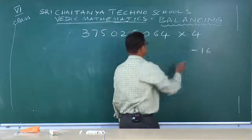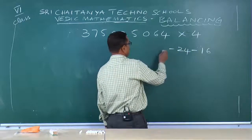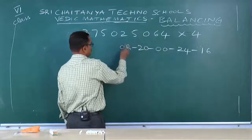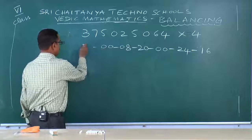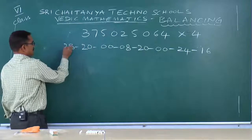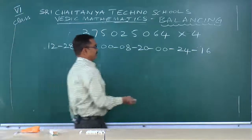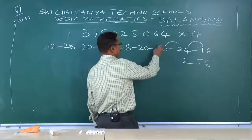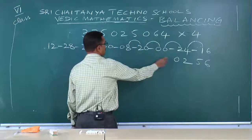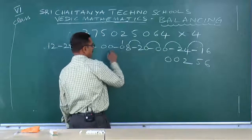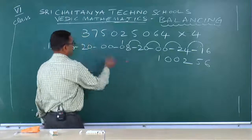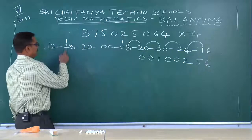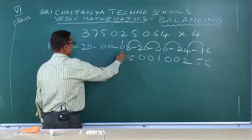4 into 4: 16. 24. 0, 0. 20. 0, 8. 0, 0. 20. 28. 12. 6 comes out. 5, 2, 0, 0. 1 is carried forward. 1 plus 0: 1. 0 plus 0: 0. 2 plus 8: 10. 1 is carried forward. 3 plus 2: 5. 1 comes out.